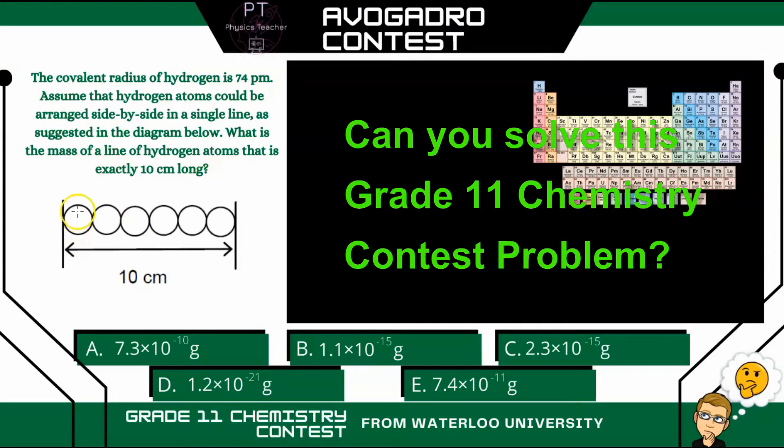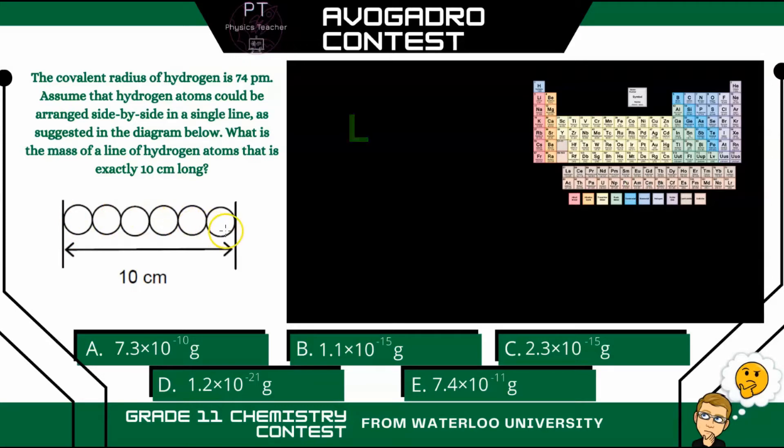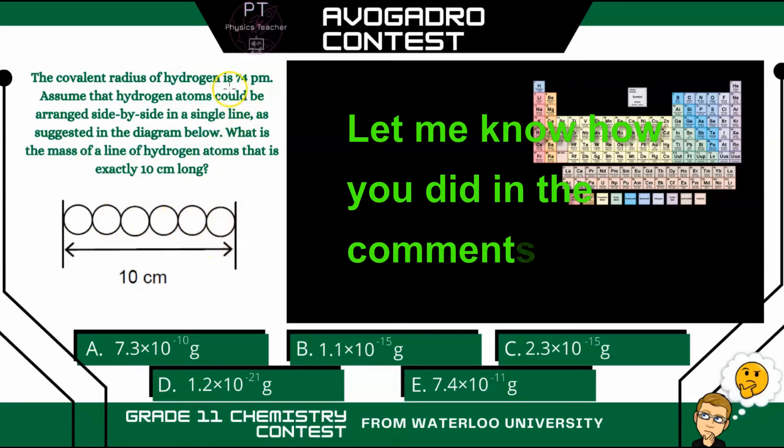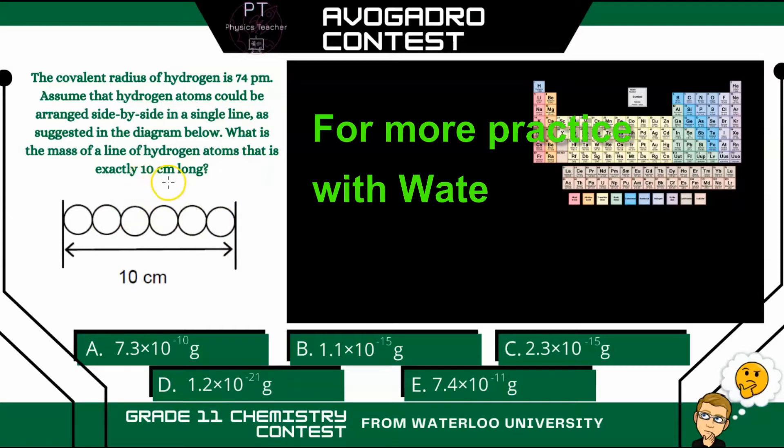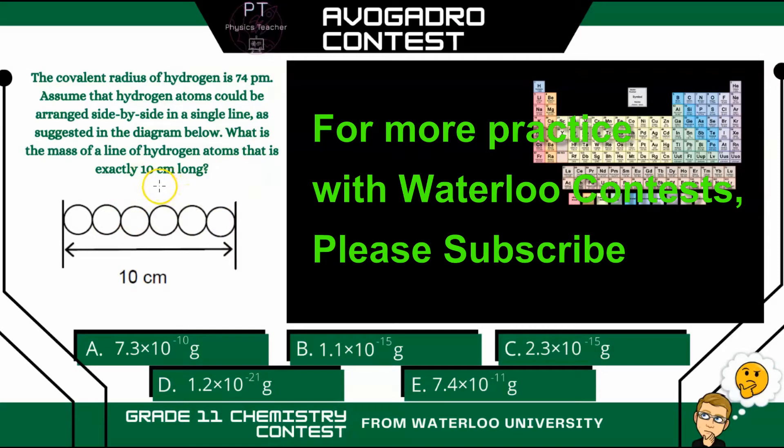In this question, we have a line of all of these hydrogen atoms, and if we know the radius of one, what would the mass be if this line is 10 centimeters long? Give it a try, and I'll be right back with the solution.